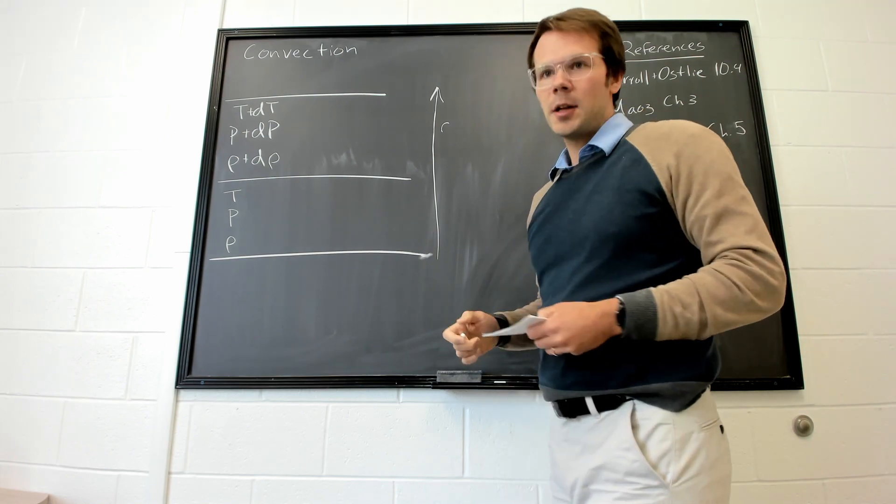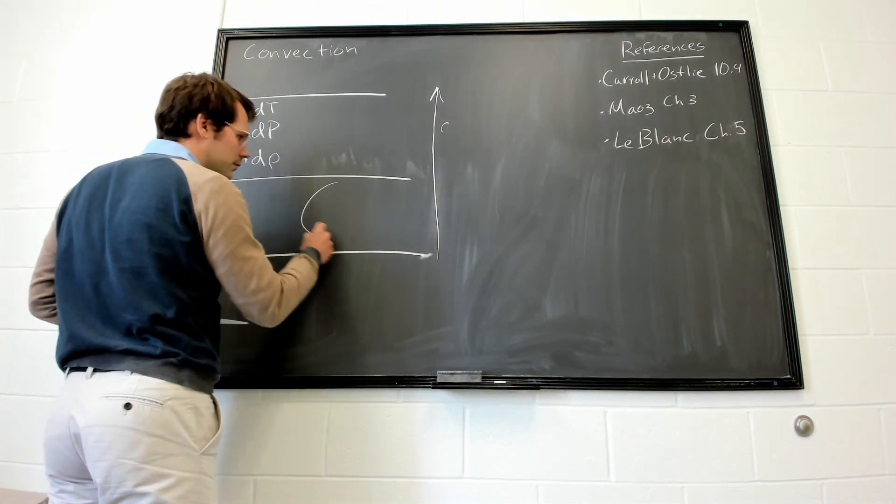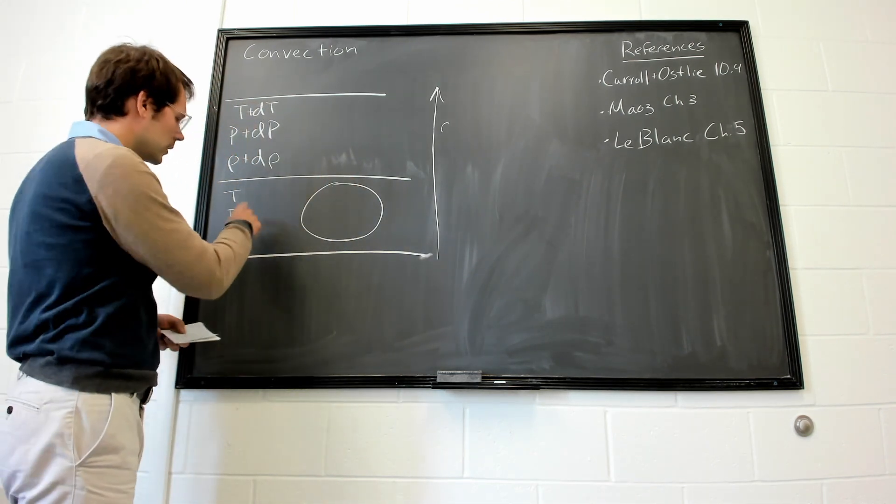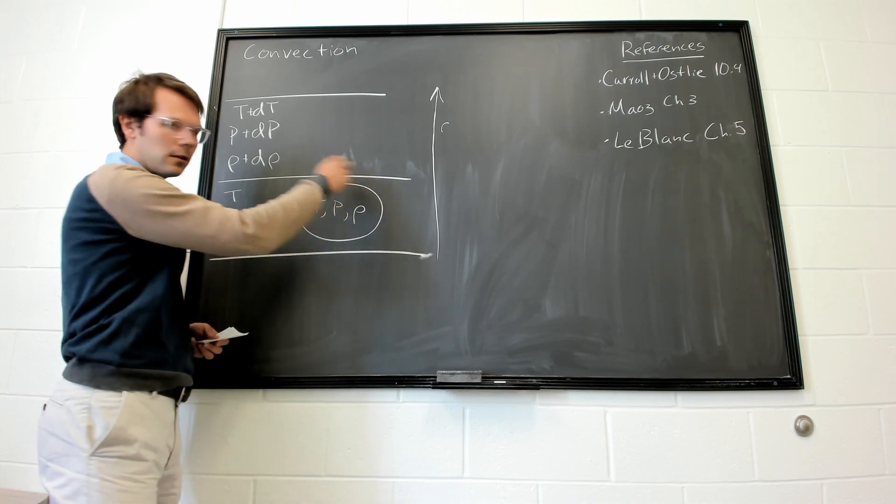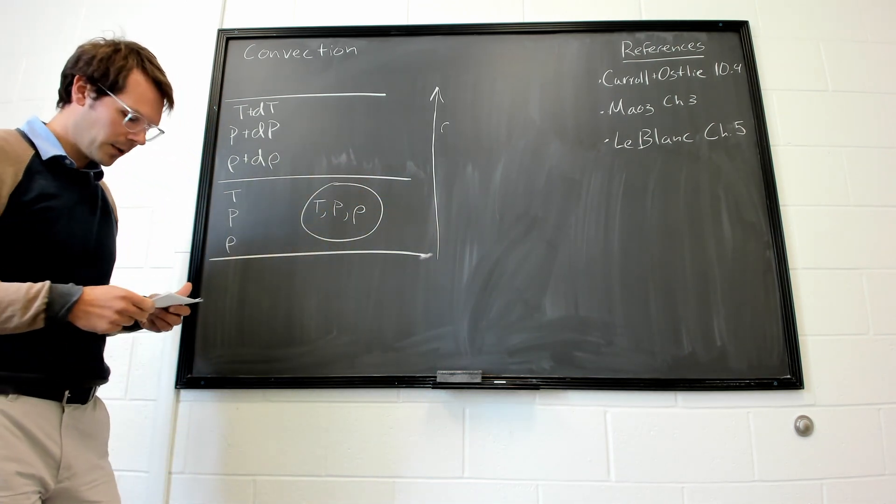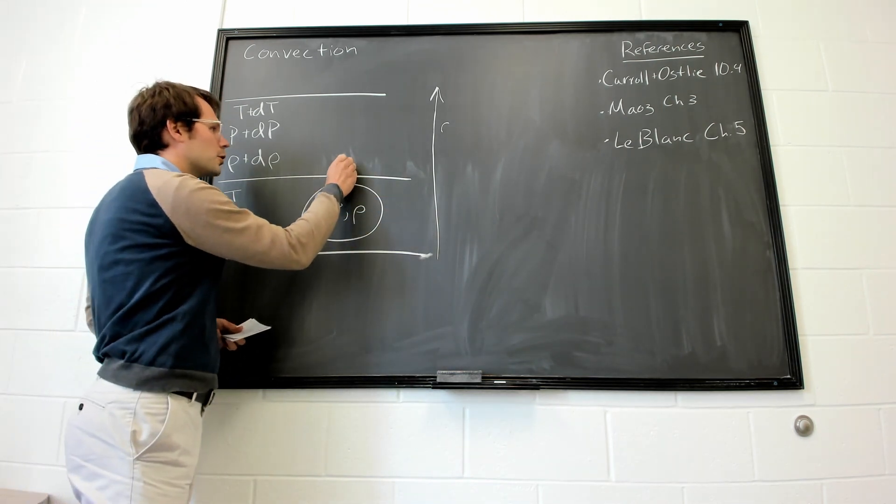So, convection asks, if we consider a cell of material in this layer, this is going to have the same temperature, pressure, and density as this sort of layer. So we're just going to grab a little bit of a cell. If this cell was perturbed, let's say upwards, what's going to happen to it?